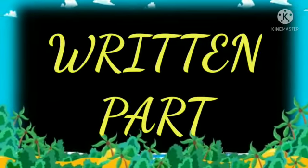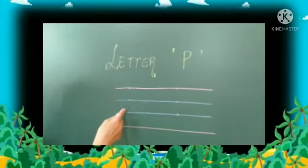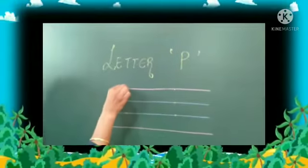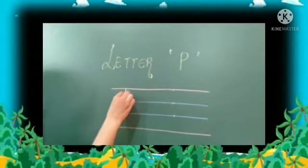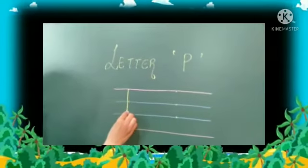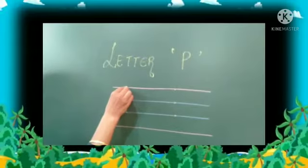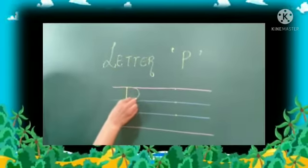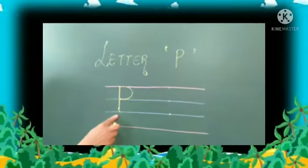Now let's write letter P in our notebooks. You have to keep the dots like this. So babies, keep a pencil here, first make a standing line, then again keep a pencil here, make a curve. This makes letter P.